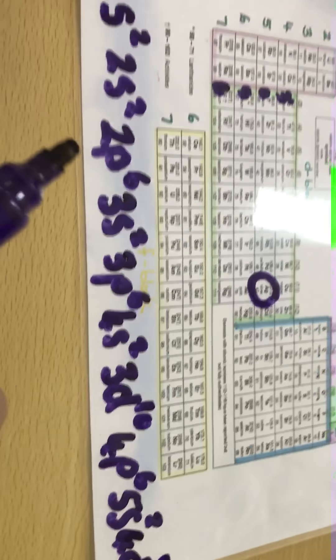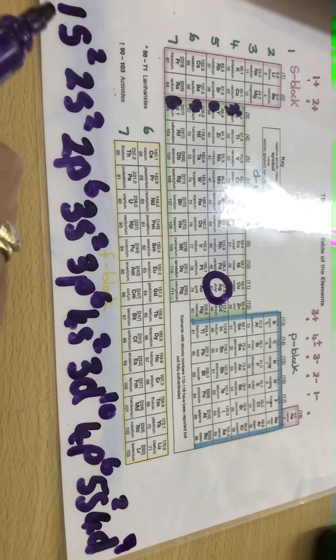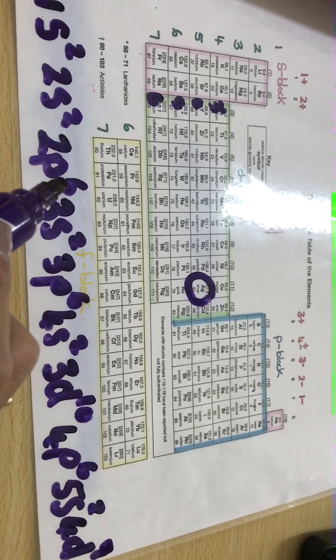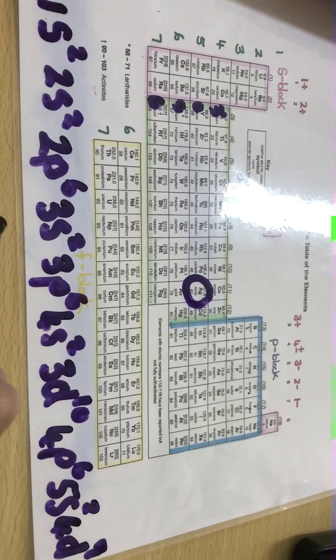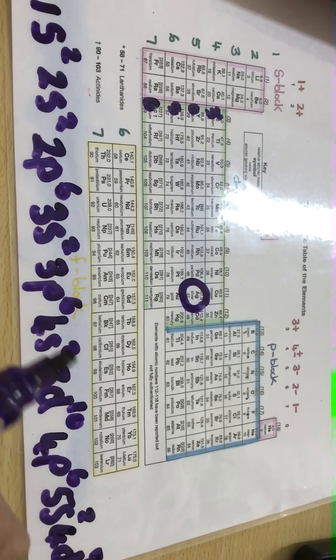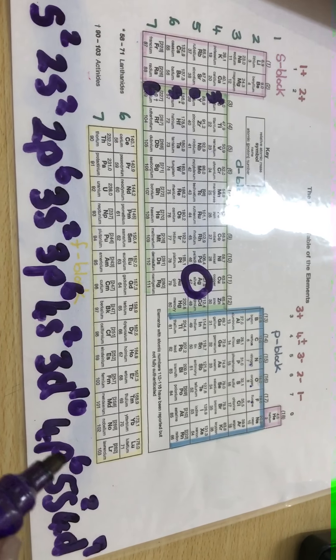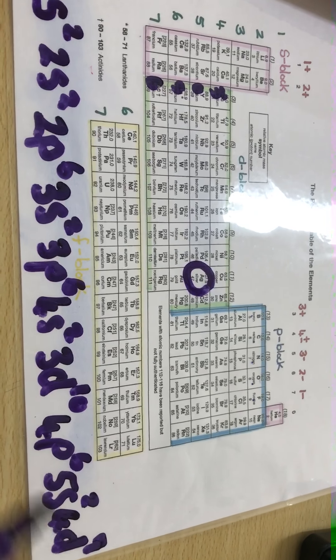So if I look at my SP notation for silver it will be 1s2, 2s2, 2p6, 3s2, 3p6, 4s2, 3d10, 4p6, 5s2, and then 4d9.